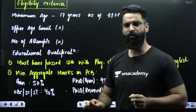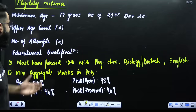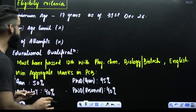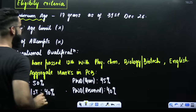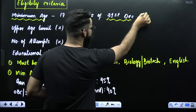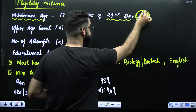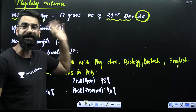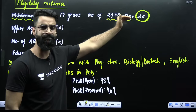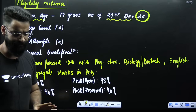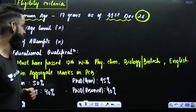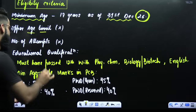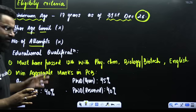Now the most important thing — where majority of students had confusion — is the eligibility criteria. If you want to write the NEET 2026 examination, the minimum age requirement is that by 31st December 2026 your age should be greater than or equal to 17 years. There is no upper age limit to write the NEET examination, and the number of attempts is unlimited.